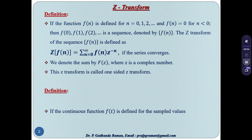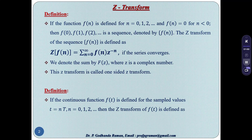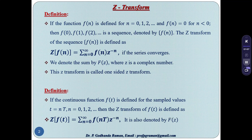Another definition: if the continuous function f(t) is defined for the sample values t = nT, n = 0, 1, 2 and so on, then the Z-transform of f(t) is defined as Z{f(t)} = summation n=0 to infinity of f(nT) z^(−n). It is also denoted by capital F(z).